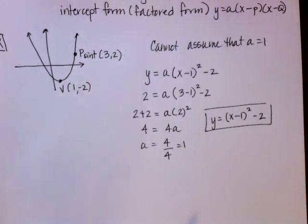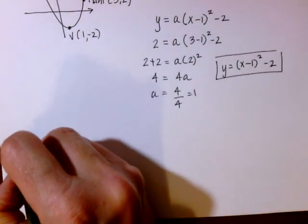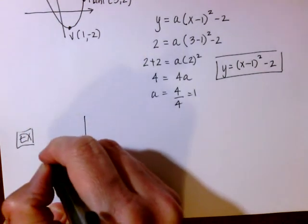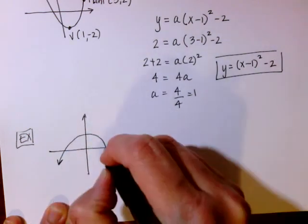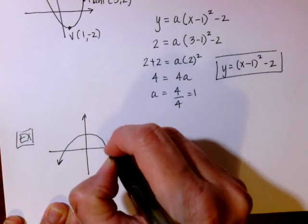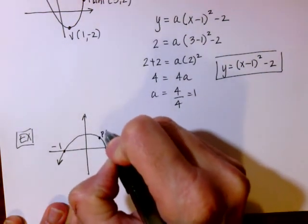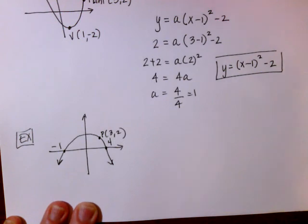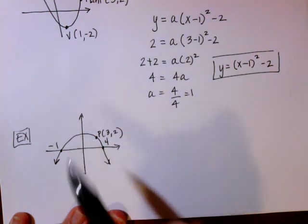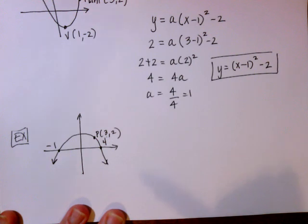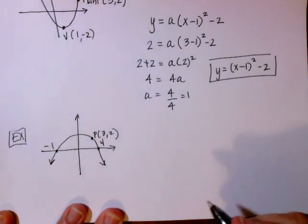That is the equation for the first problem. Now let's do another example. This time I'm given a slightly different parabola — this one is turned upside down. I know the x-intercepts: one is 4 and one is −1. I also have an additional point (3, 2) — this is not the vertex, just an additional point. Since I know the two x-intercepts, I'm going to start in intercept form.